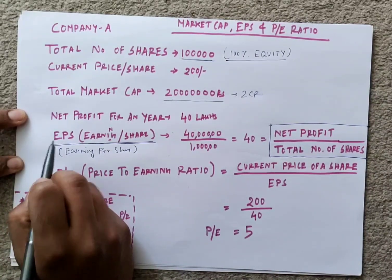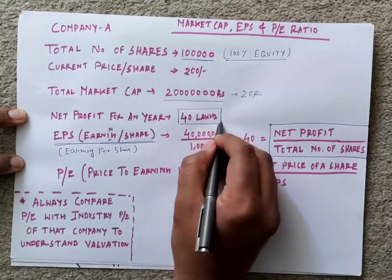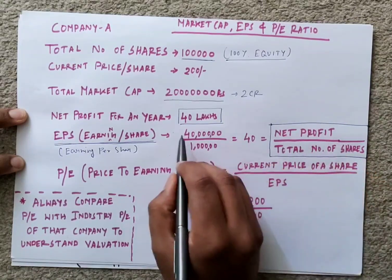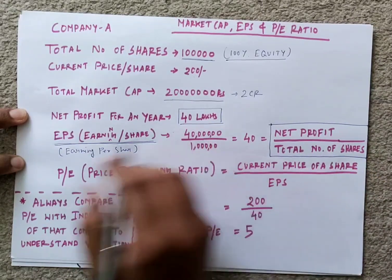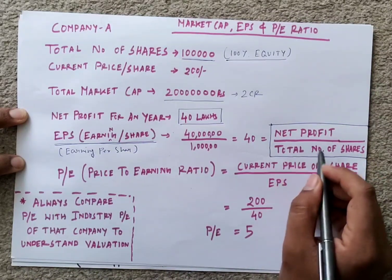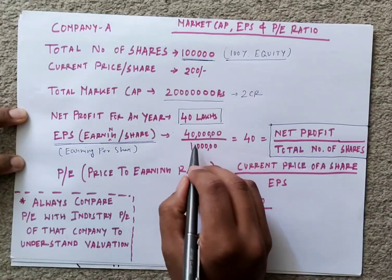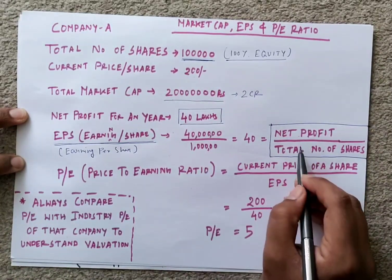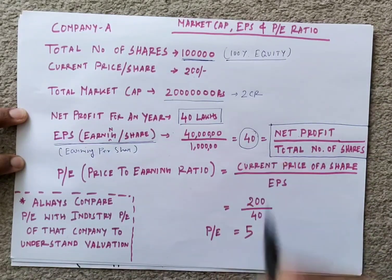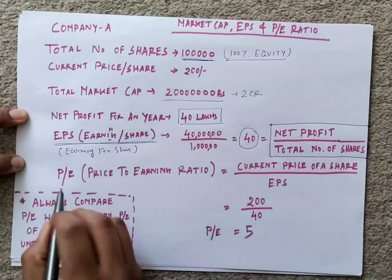Let's say the net profit for that year is 40 lakh rupees. You divide this by the total number of shares, which is one lakh. So 40 lakhs divided by one lakh shares gives you an EPS of 40. That is your EPS.